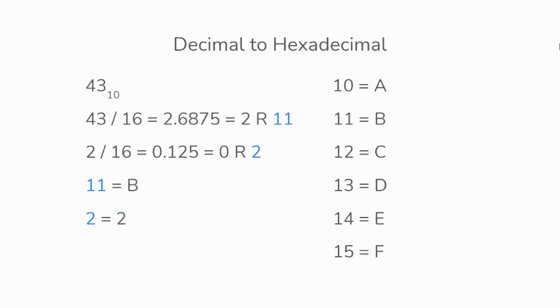Here we can see that the 2 will correspond to a 2, and 11 will correspond to B. So the decimal number of 43 converted to hexadecimal would be given as 2B base 16.